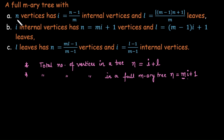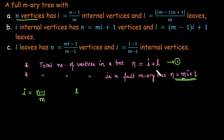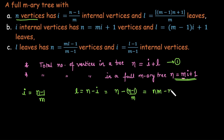For case 1, where the number of vertices n is given, we can find internal vertices i = (n − 1) / m. Then we can evaluate the number of leaves: leaves = n − i = n − (n − 1)/m. Simplifying, we get leaves = (m − 1) × n + 1 divided by m.